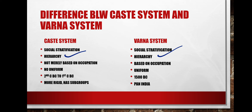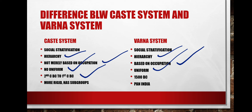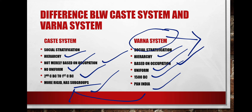In the caste system, caste is not merely based on occupation, so even if you are not belonging to a certain occupation you remain in the same caste. But in the varna system, if you change occupation, your varna also changes. The caste system has no uniformity — it differs in northern, southern, eastern, and western India — whereas the varna system is uniform across India. The caste system originated in the 2nd century BC, the varna system around 1500 BC. The caste system is more rigid with subgroups, while the varna system allows a little social mobility.